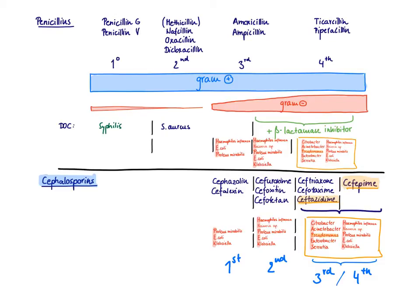Then we have the third generation. Examples are ceftriaxone, cefotaxime, and ceftazidime. You can remember those just with TRIX, TAX - TRIX, TAX for the third generations.